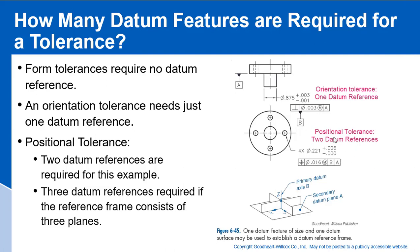For this positional tolerance, we needed two datum references in the feature control frame — that was a case where the datum reference frame has one feature of size and one plane. But three datum references are required if we used three planes to establish our datum reference frame.